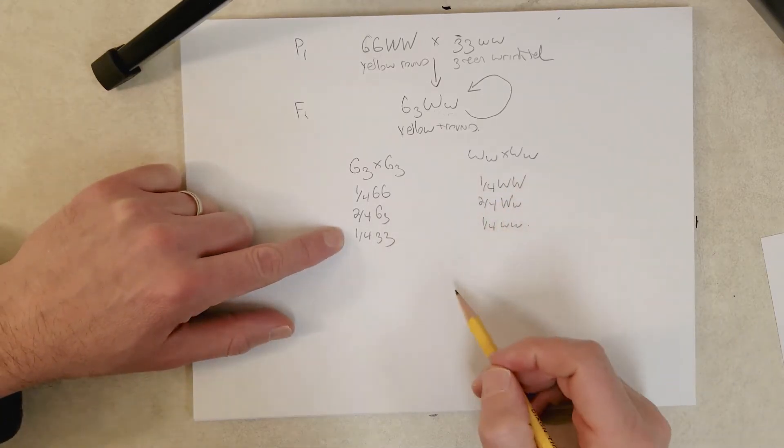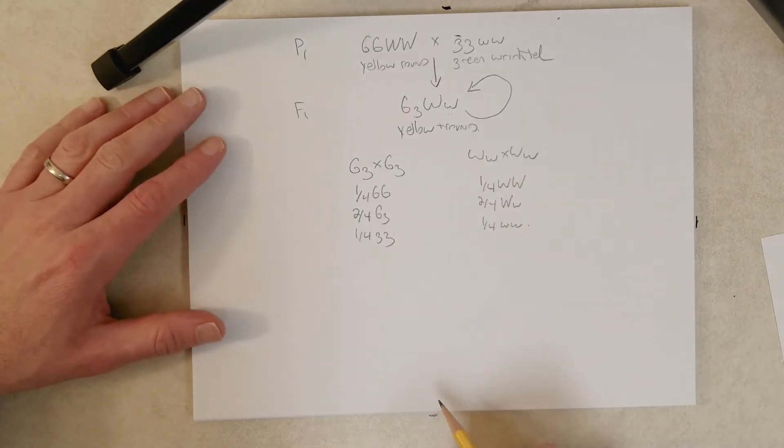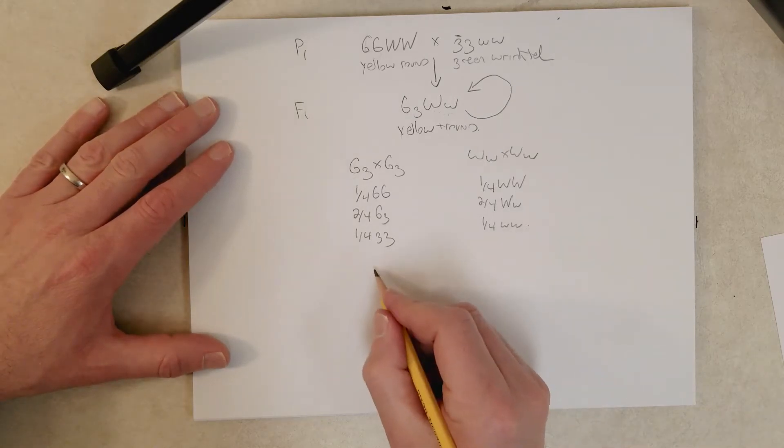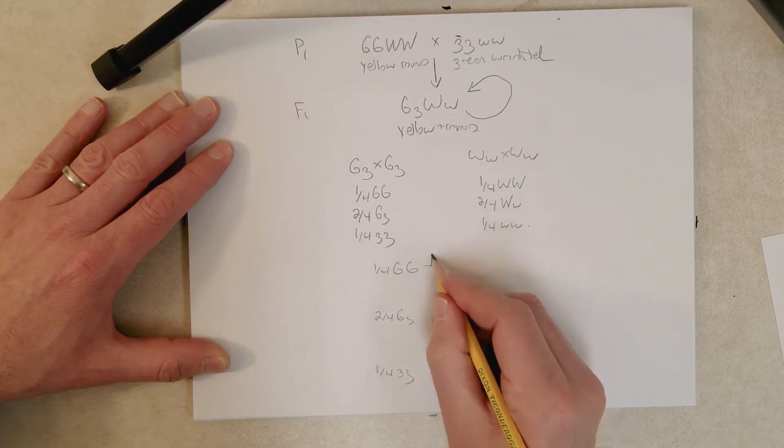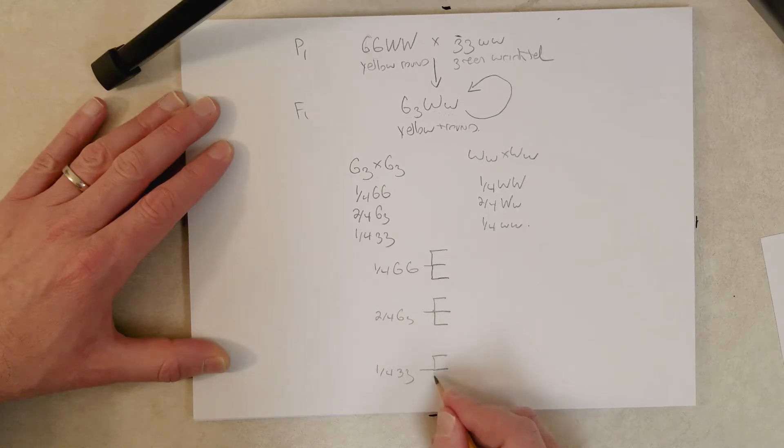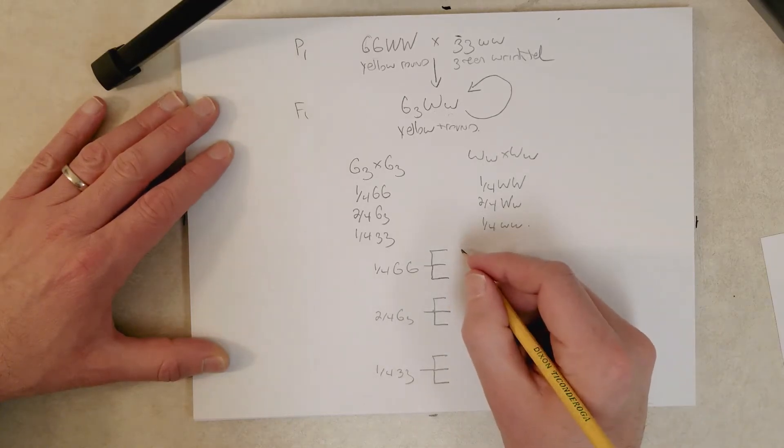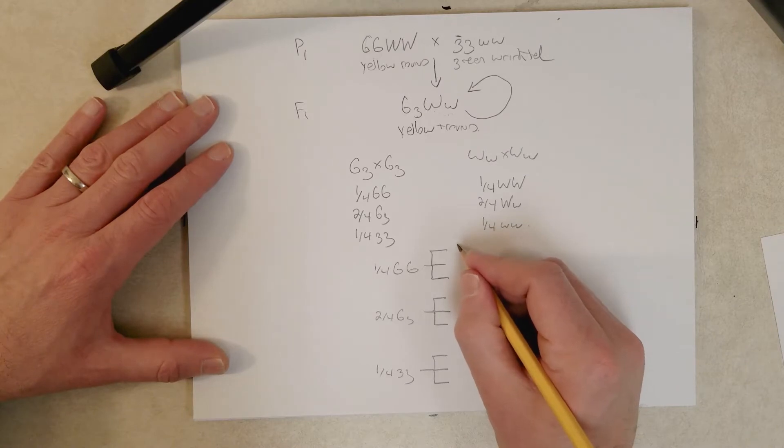Now we combine these, right, to get the F2 genotypic and phenotypic ratio. How do we do that? Just like this. I hope you can see this text in the video. I'm going to write kind of small so I can fit it all on this piece of paper.